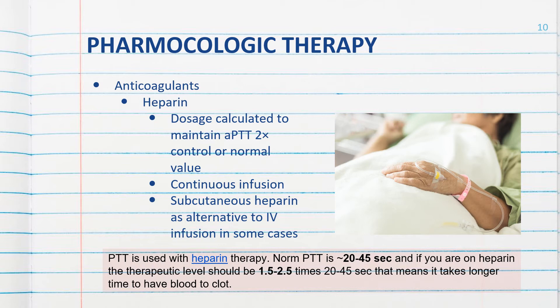We may start the patient on Coumadin oral pills at the same time as heparin. This patient will go home from the hospital in a few days and will be given oral anticoagulant — the Coumadin — to take home. But it takes Coumadin four to five days to become fully effective, so we must start that treatment in the hospital so that when they go home and are no longer receiving IV heparin, they are already taking the oral Coumadin.